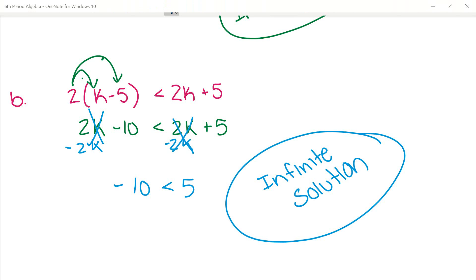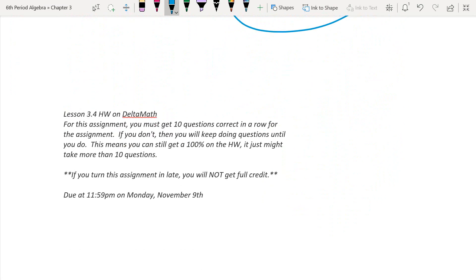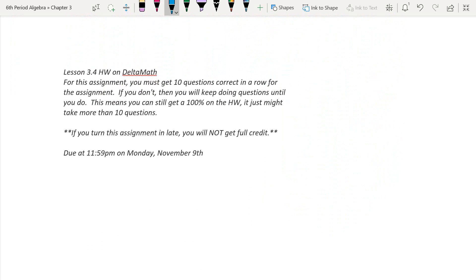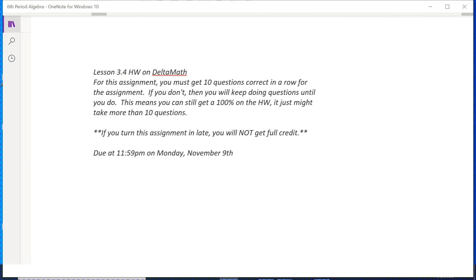Okay. Well, that's it for your lesson. You have homework. It is 3.4 on Delta Math. You need 10 questions in a row correct. If you don't, you'll keep doing questions. Remember that if you're turning in your homework assignment late, you do not get full credit. I take off points. Please make sure this assignment gets done on time, which is due on Monday, November 9th at 11:59. Send me a message if you need help on any of your work. Please don't forget to complete your quiz, also due Monday. And your 3-2-3-3 homework is due tonight by midnight. Bye.